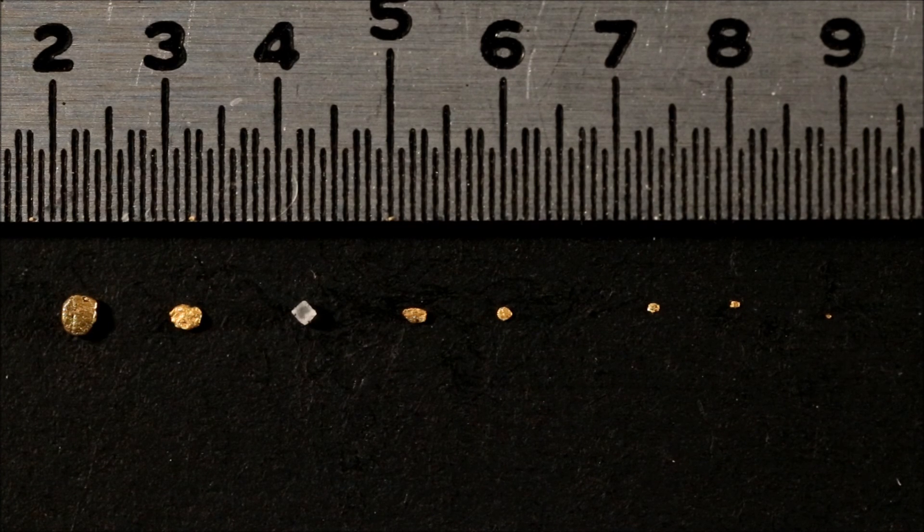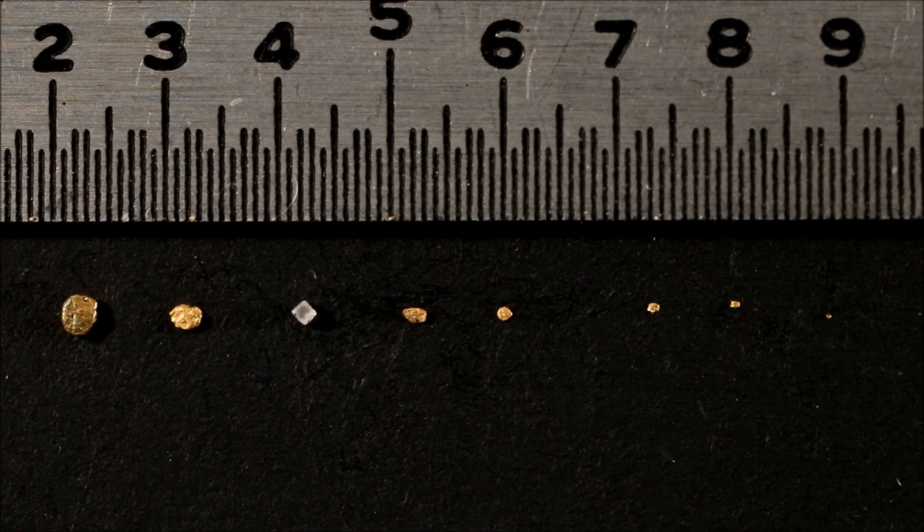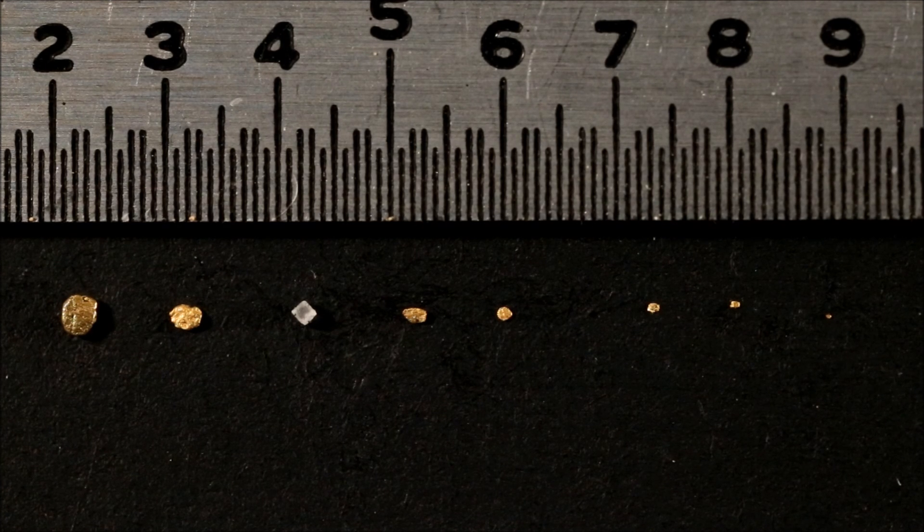This works out to be something around a 90 mesh. Sometimes I can pick up pieces of 100 mesh with my tweezers, usually I give up around a minus 70 mesh and just use the snuffer bottle.